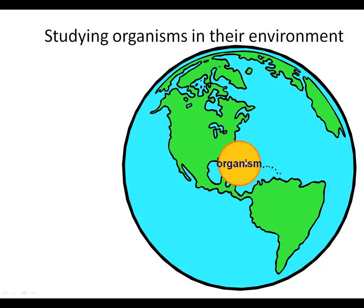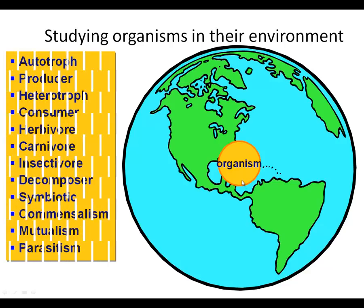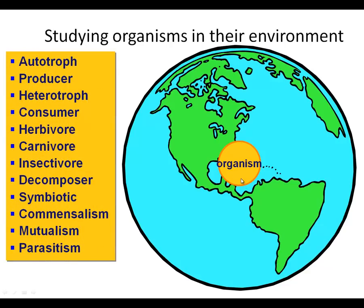We'll talk about the organism level, which can actually be an autotroph — which is an auto producer, auto energy. They're also known as producers. They're ones that can take the sun's energy, turn it into sugar, primarily. Or they can take some other chemicals deep down in the ocean, sulfur products, and turn them into a usable form for themselves and other ones.